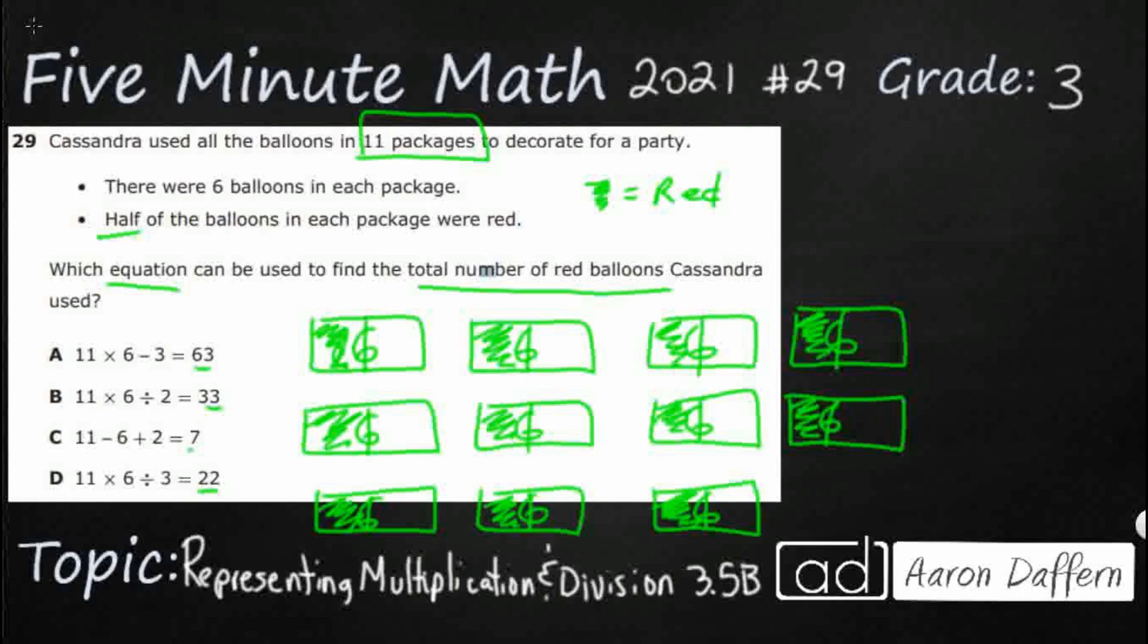Well, how many balloons are in each package? Six. How many red balloons are in each package? Well, it looks like that's going to be three, right? Because it makes sense. Three and three. So what if I just put a three on top of each of these? And I think that's going to get us our answer.